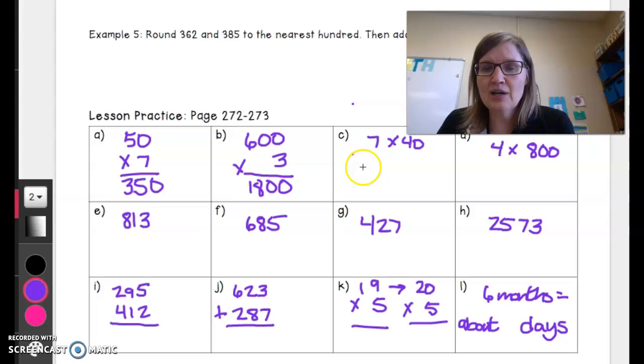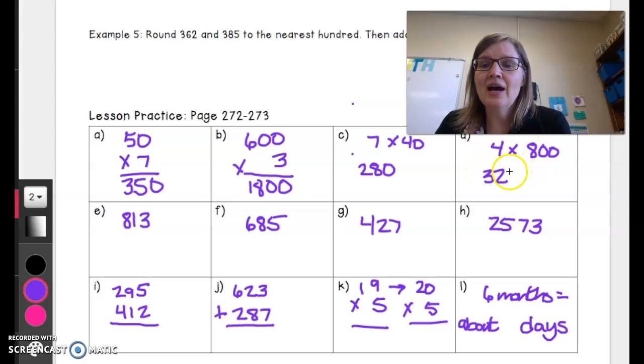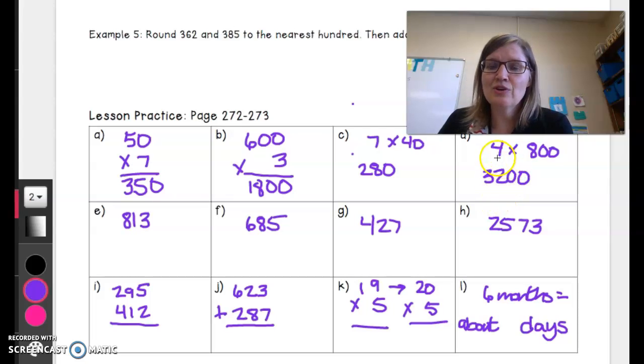4 times 8, one of my favorite math facts. 4 times 8 is 32 and then I put on two more zeros. So 4 times 800 is 3,200.